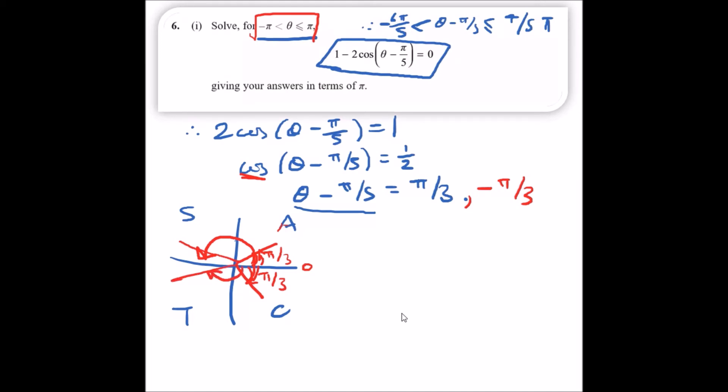Hence, these are the solutions. Now to get the actual value of θ, we just add π/5 to both these terms. Therefore, θ = π/3 + π/5, and θ also equals -π/3 + π/5.